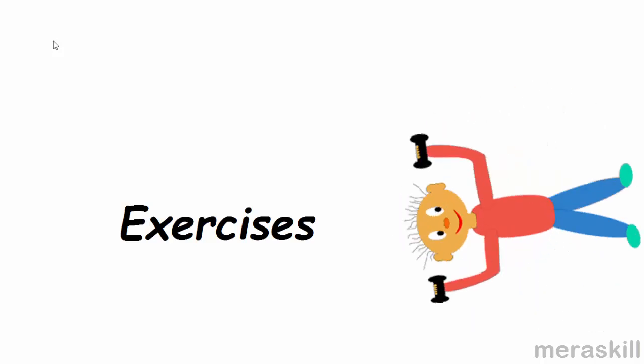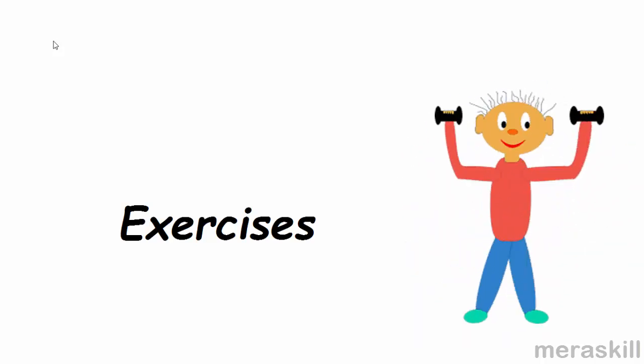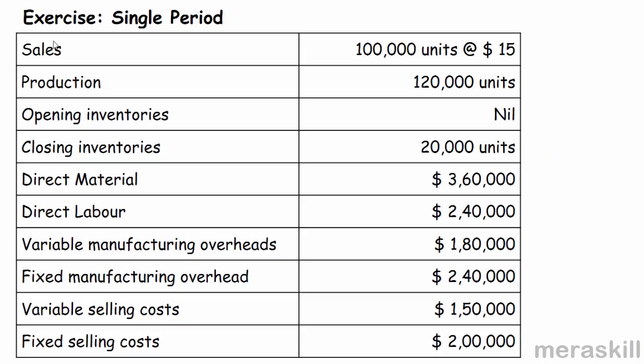Okay students, so now for some exercises to understand inventory costing under absorption and marginal costing, or variable costing or direct costing. What is given here: sales is 100,000 units at the rate of 15 per unit. Production is 120,000 units.